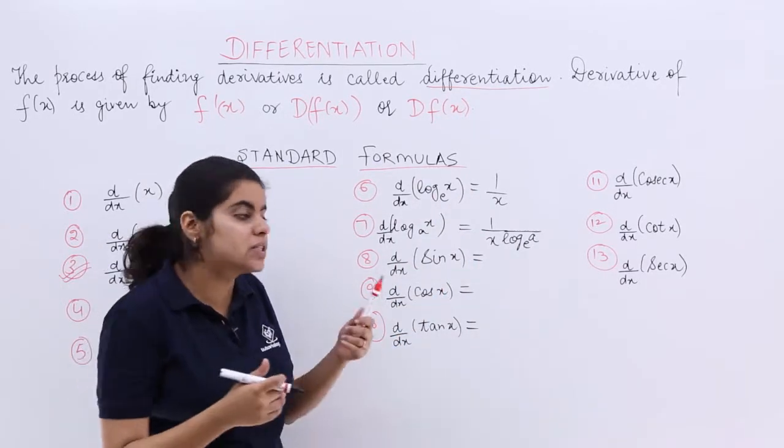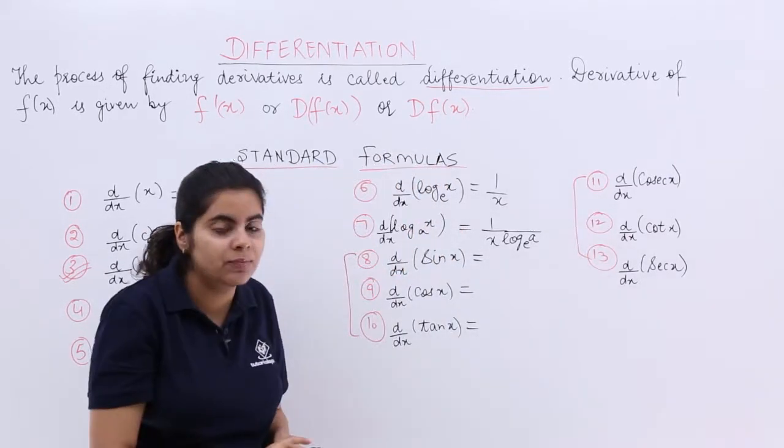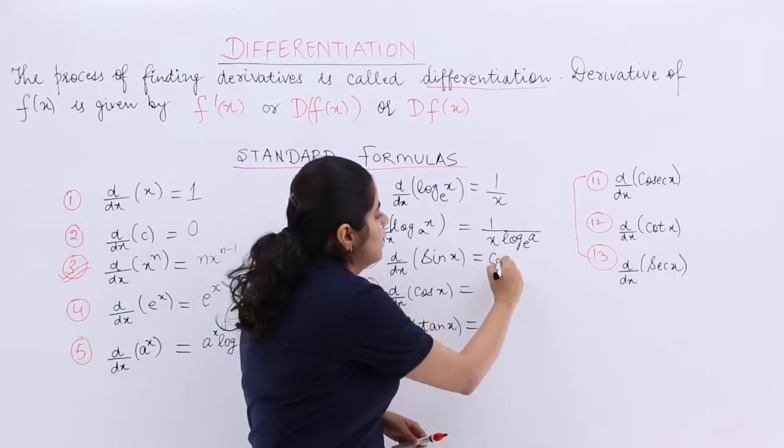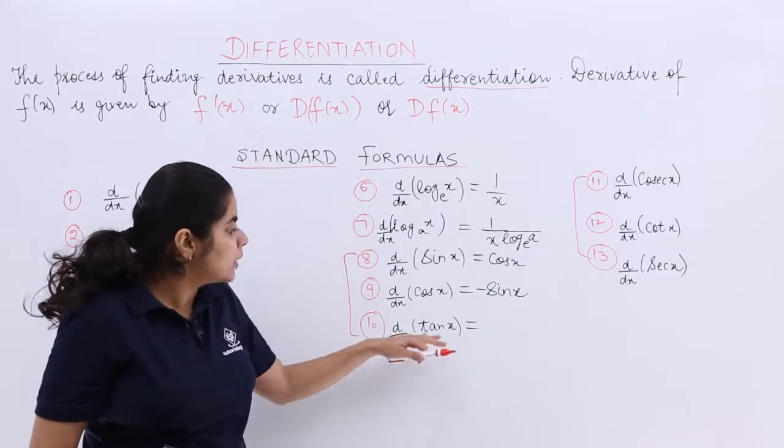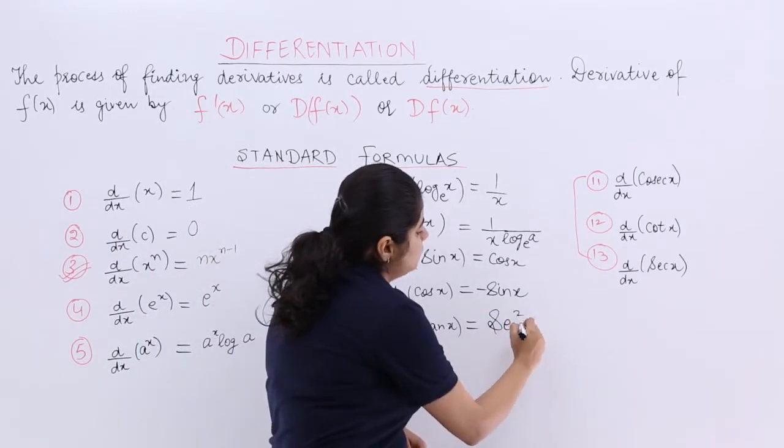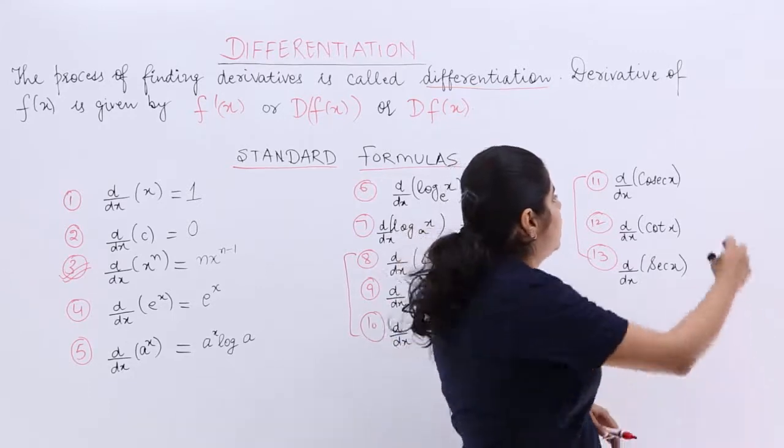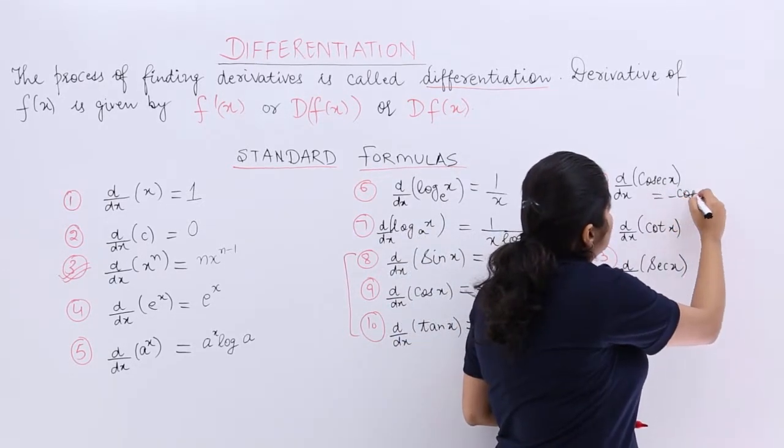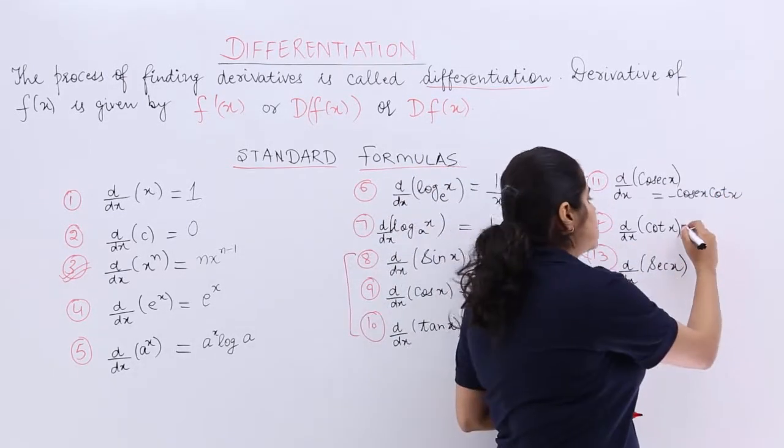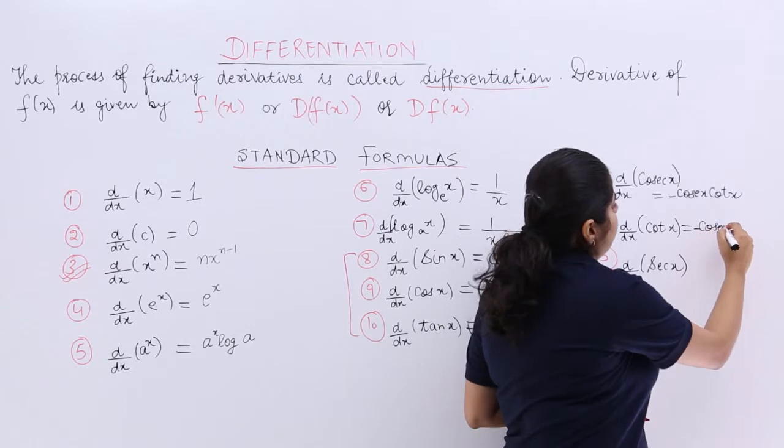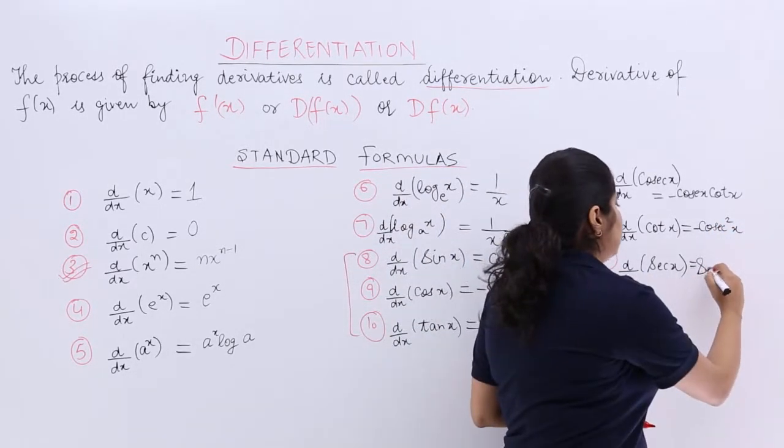Sine x derivatives, these all are now your trigonometric formulas that are coming into picture. These 6. You have to remember them. Sine x derivative is cos x. Cos x derivative is minus sine x. This you have already done. Tan x is secant square x. Next, cosecant x is minus cosecant x into cot x. So it is minus cosecant x cot x. Cot x is minus cosecant square x. And secant x is nothing but secant x multiplied by tan x.